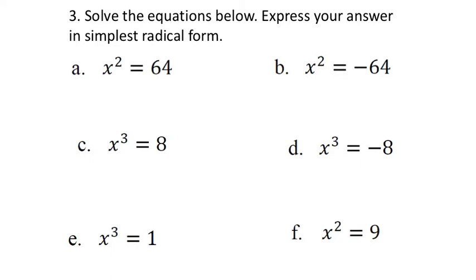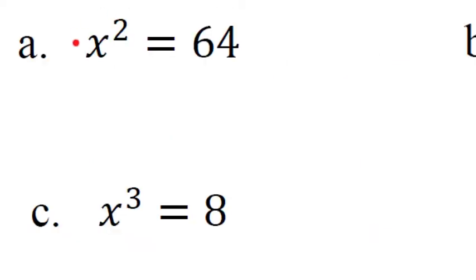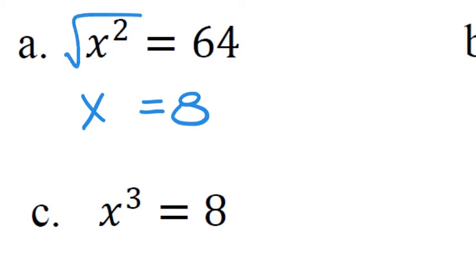Let's solve some equations. Part A: x²=64. What times itself is 64? That's 8, because 8×8=64. We can use the principle of equality: take the square root of both sides. The square root and the exponent of 2 cancel, leaving x=8. With the principle of equality, whatever you do to one side you must do to the other. You should check your answer: 8×8=64, so it checks out.